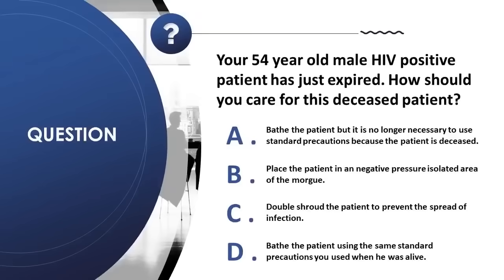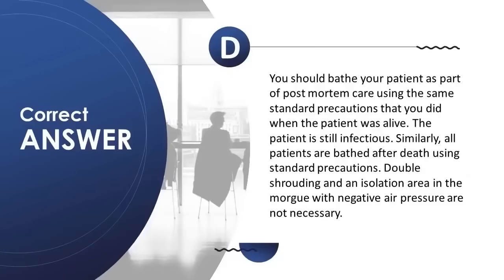Question 5: Your 54-year-old HIV-positive patient has just expired. How should you care for this deceased patient? A) bathe but standard precautions are no longer necessary; B) place in negative pressure isolated area of morgue; C) double shroud the patient; D) bathe using the same standard precautions used when alive. Correct answer is D. You should provide post-mortem care using the same standard precautions used when the patient was alive. The patient is still infectious. Double shrouding and negative pressure in the morgue are not necessary.